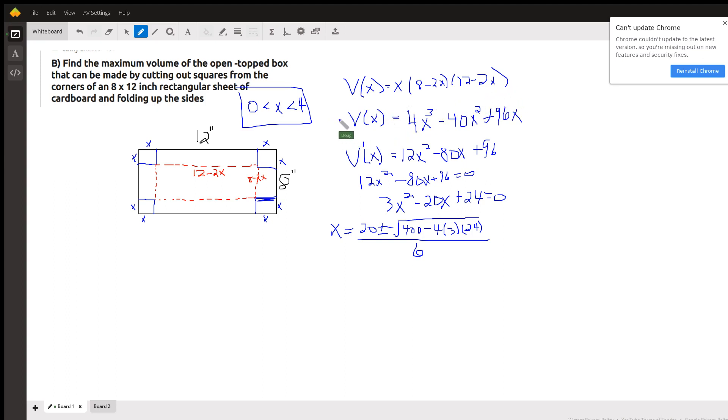Here I've multiplied these expressions together. Take V prime and set it equal to 0 to find the critical numbers. I note that I can divide every term by 4 to make the numbers smaller.